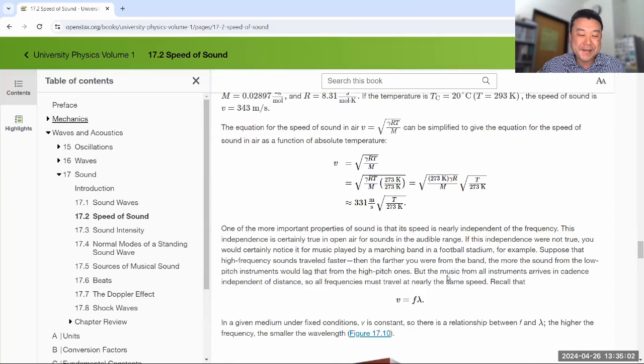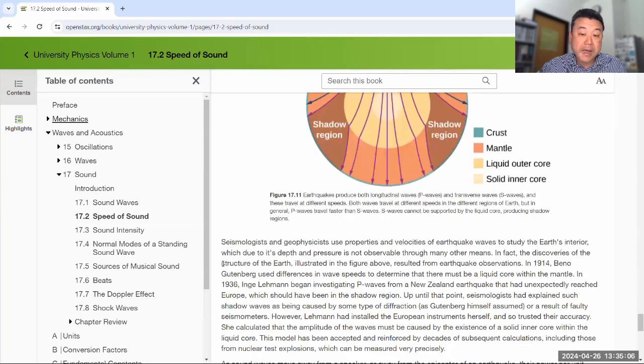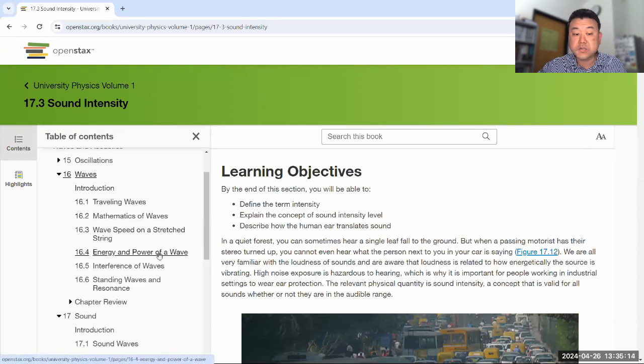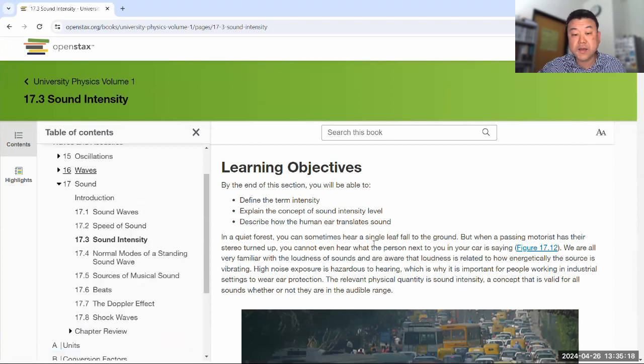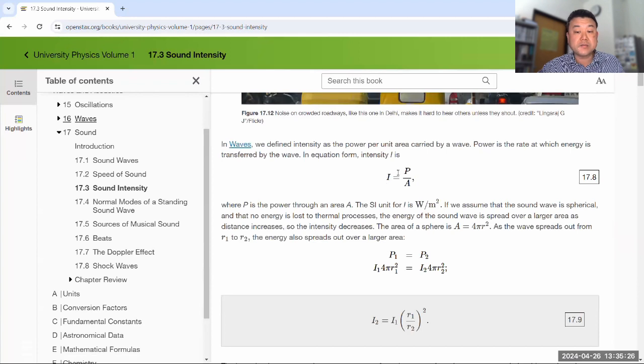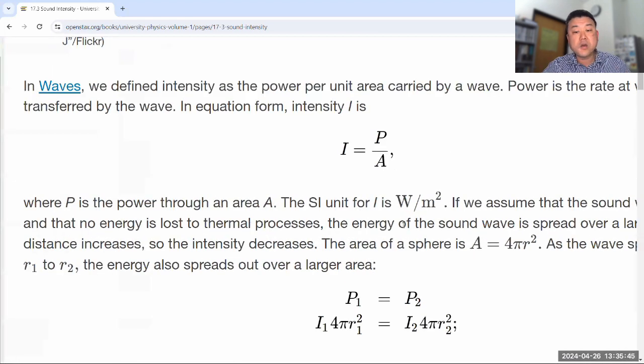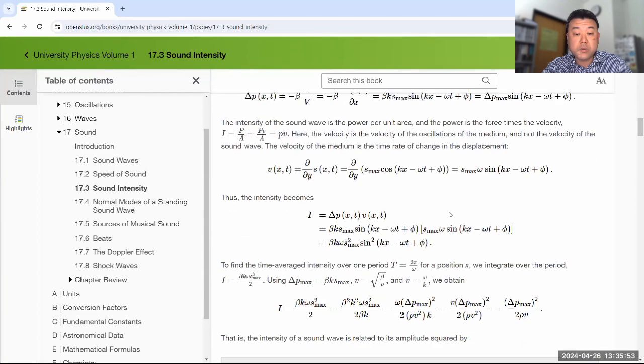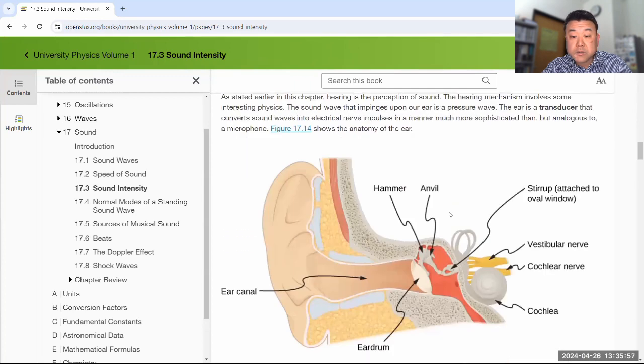Sound intensity is an application of some of the things you saw in section 16.4, energy power of a wave. Sound travels in three-dimensional space and you can talk about intensity as power divided by area. That'll give you the intensity of the sound wave. We have different units that measure intensity of sound specifically. Watts per meter squared is a general unit for any wave.